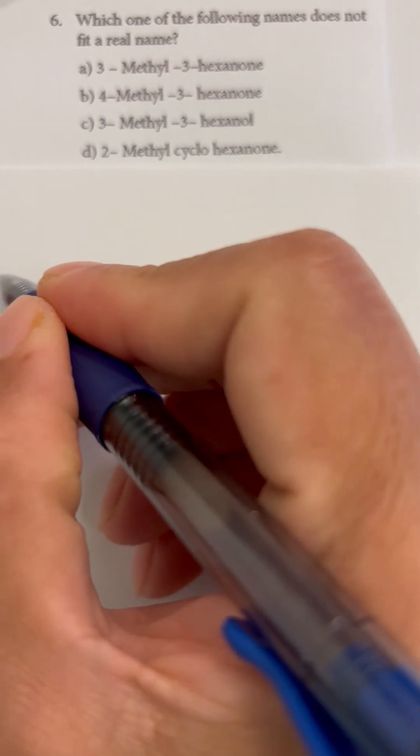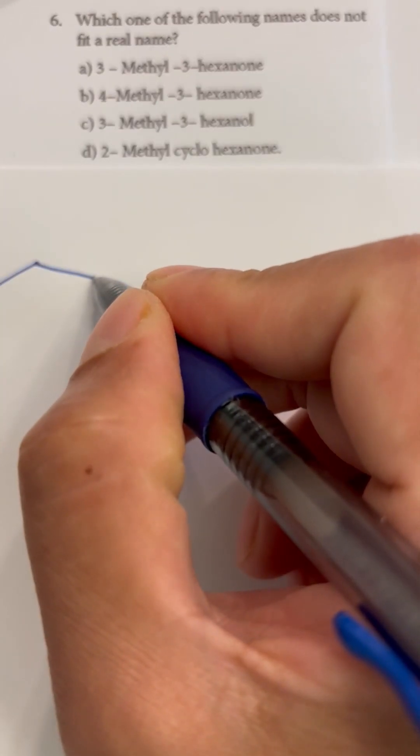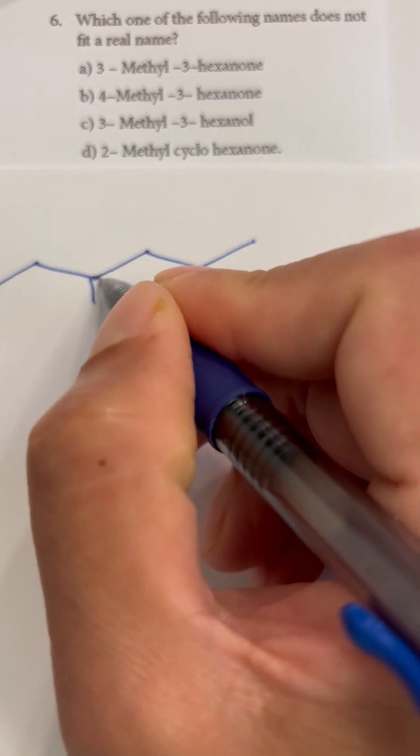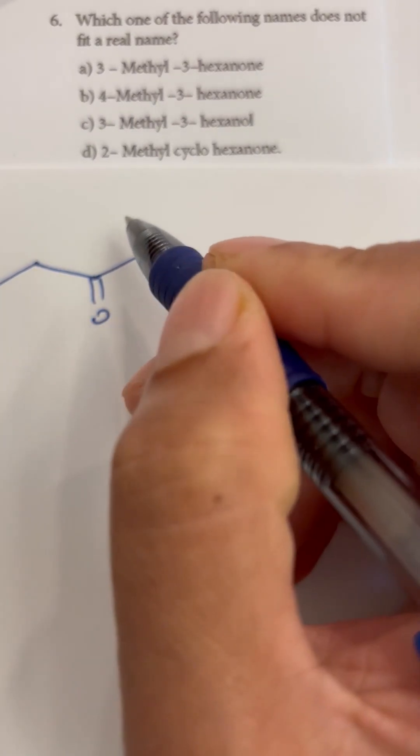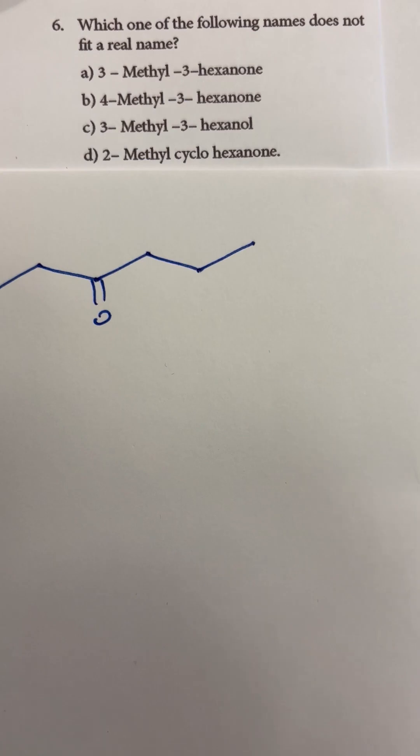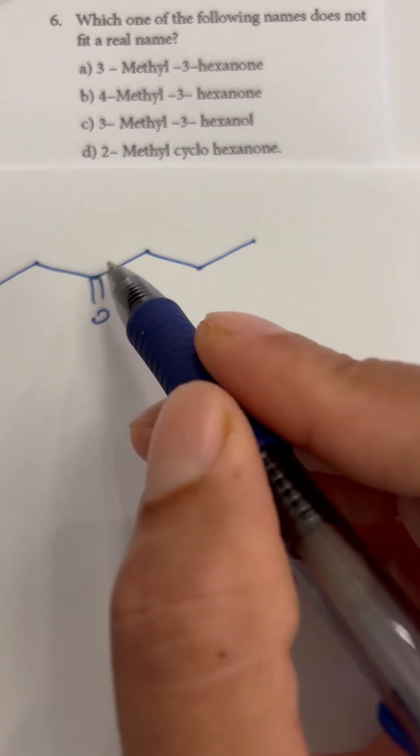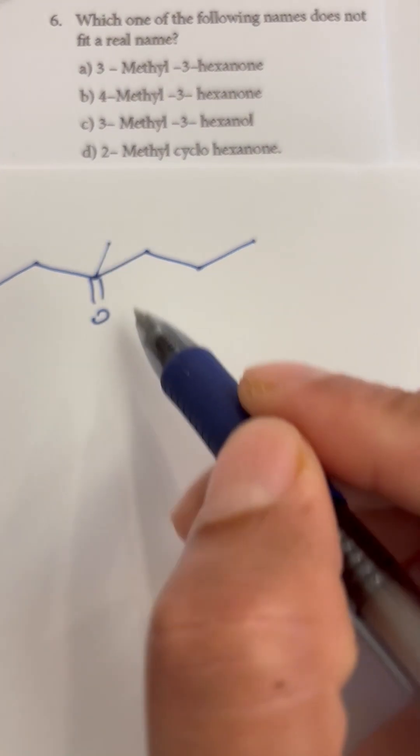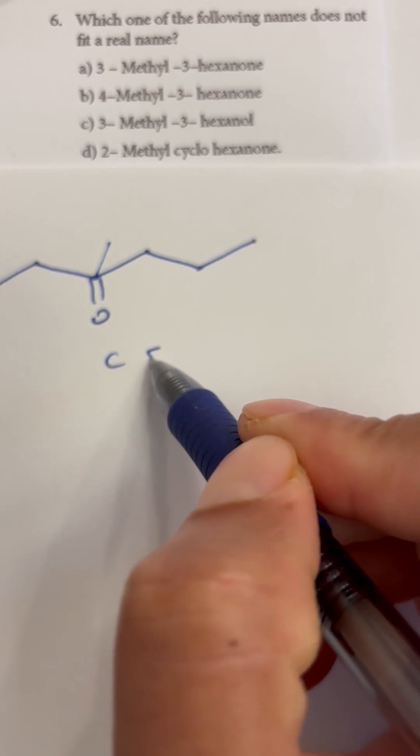So let's draw that: one, two, three, four, five, six. 3-hexanone, but at the same position they are saying 3-methyl, which is not possible because if we try to draw the methyl group here then carbon will have five bonds.